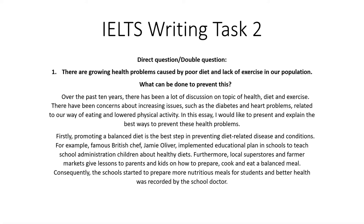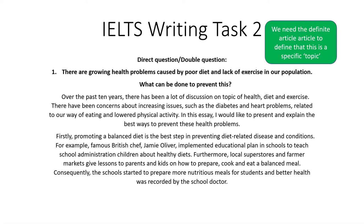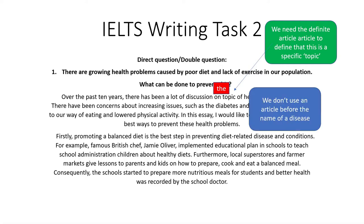Do you see the mistakes? Firstly, in sentence one: 'there has been a lot of discussion on THE topic of health' — we need the definite article because 'topic' is very specific; it's a specific topic about health, diet and exercise. In sentence two, we refer to 'diabetes', which is a disease, so we don't need an article at all — remove 'the' before 'diabetes'.